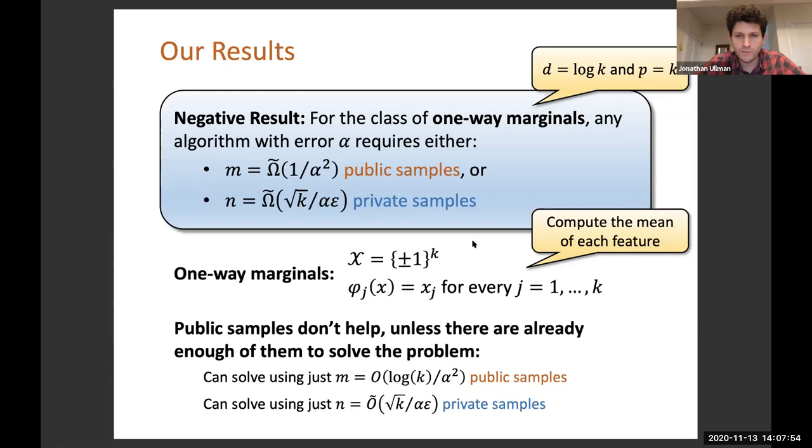For this problem, what we show is that in order to solve this problem, you either need to have 1 over alpha squared public samples or square root k over alpha epsilon private samples. Either of those independently would be enough to solve this problem. What our result shows is that basically, in order to solve this problem privately, enough of your samples have to be public that the public samples alone are enough to solve the problem. So this is one application where public data actually doesn't help. One consequence of this result is it shows that this dependence on the dual VC dimension is necessary.